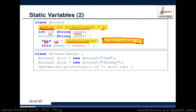This way, every time a new object is created, this value is renewed automatically. The ID for Jim will be 1, for Jeremy it'll be 2, and if we had acc3 for Elsa, Elsa would have an account ID of 3, and so on. That happens automatically — we don't have to specify it manually, it's taken care of by the constructor inside the class.